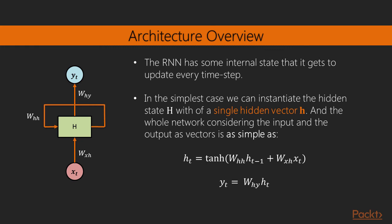So let us focus on the many-to-many architecture. The RNN has some internal state which has to be updated every time step. In the simplest case, we can instantiate the hidden state uppercase H with a single hidden vector h as we have seen in the figure of the previous slide. And the whole network considering the input and the output as vectors is as simple as these two formulas. We can compute the hidden vector at time t as the application of the tanh activation function to the sum of the product between the previous hidden layer activations and the weights matrix WHH and the product between the current input pattern XT and the weights matrix WXH connecting the input to the hidden layer. Then we can compute the output at time t as the product between the weights matrix WHY and the current hidden vector.